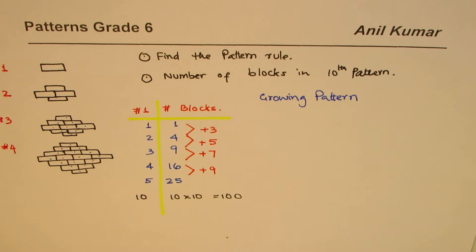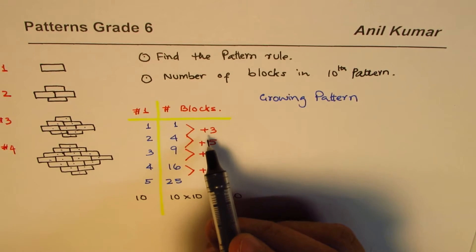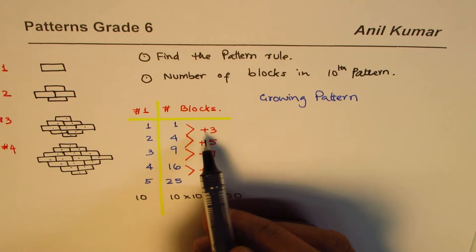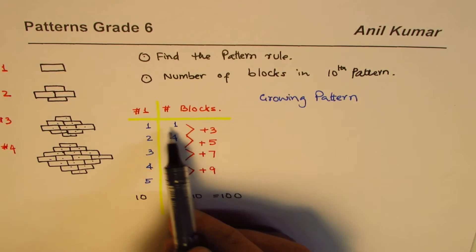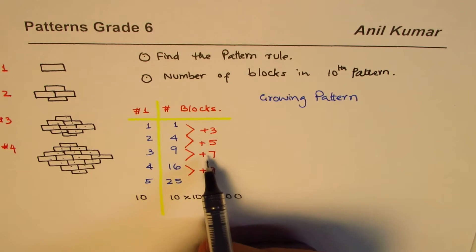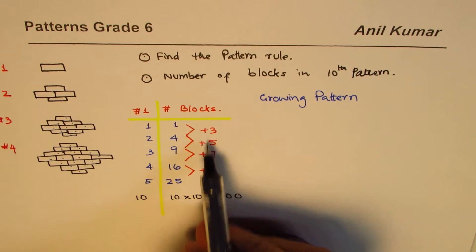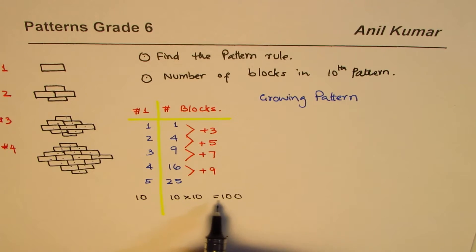That is how we get the pattern. There are different ways to describe it. One way is to say: add three, add five, add seven — two more each time. Another way is an explicit pattern rule, which is more useful.